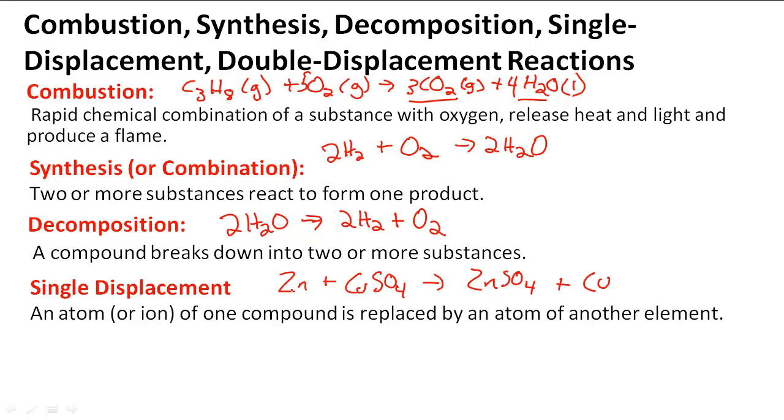This is what happens. This zinc here replaces the Cu so they switch spots, and notice now zinc is combined with SO4 plus copper which is replaced and is left out. So now we have that as a product. So when we want to singly displace, we have to remember to move the one atom or ion of one compound and replace it by another.